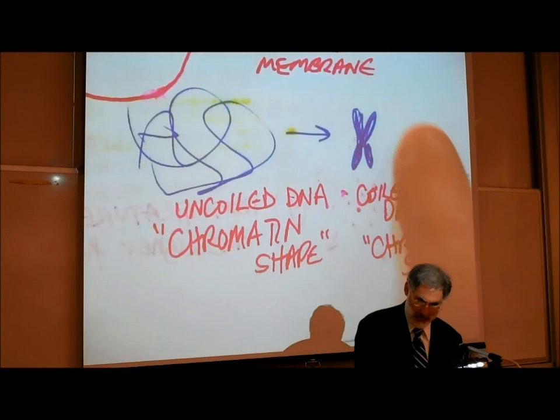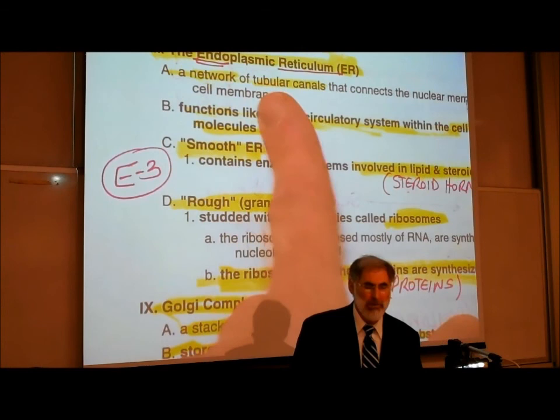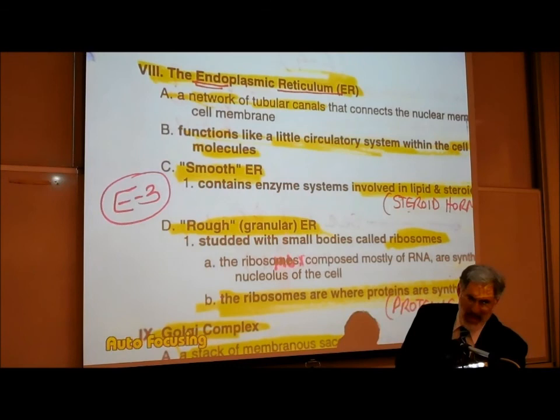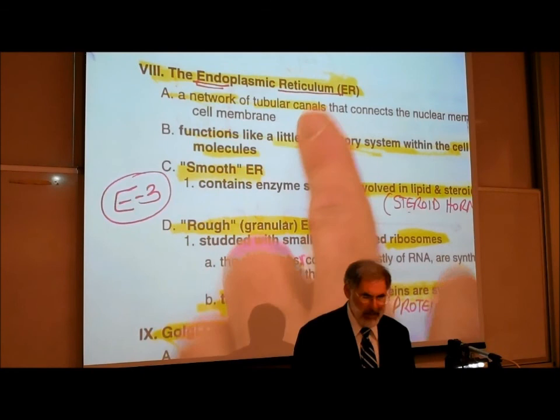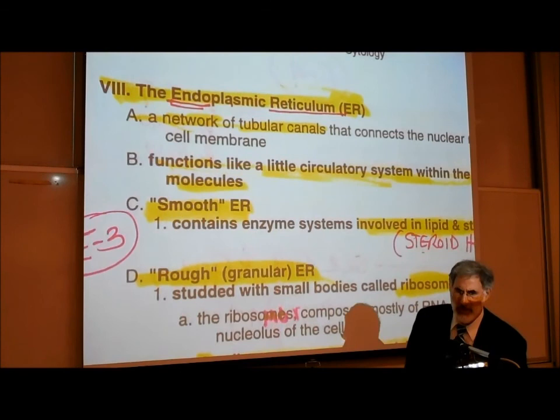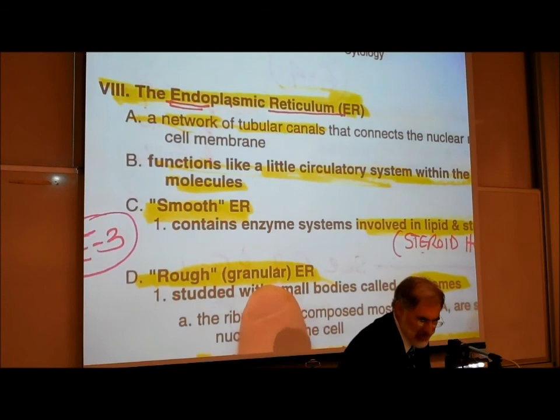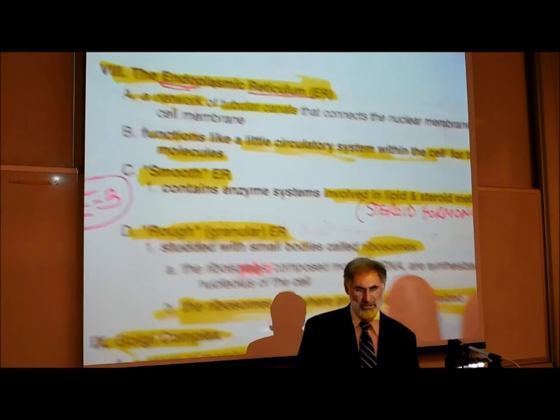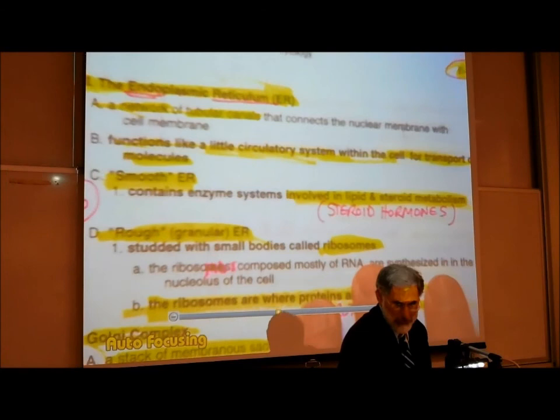The endoplasmic reticulum — what does the word literally mean? Endo means on the inside; plasmic means cytoplasm; reticulum means a tubular network. So there is a tubular network inside the cytoplasm. It's a network of tubes or tubular canals that connect the nuclear membrane with the cell membrane, functioning like a little circulatory system inside the cell for the transport of molecules.